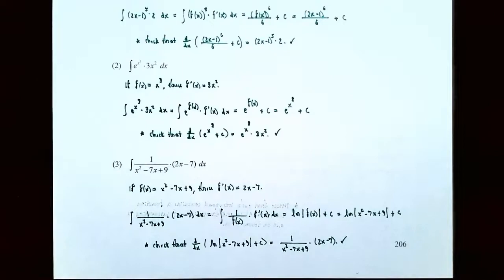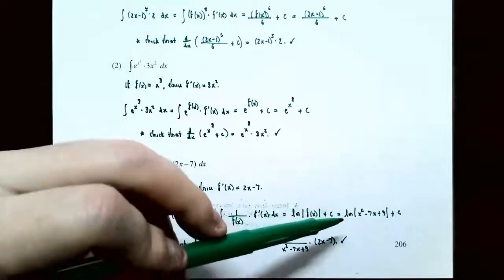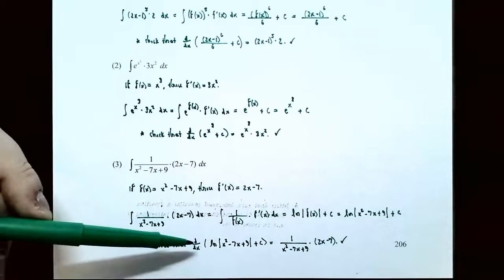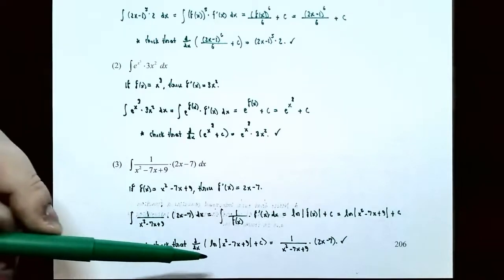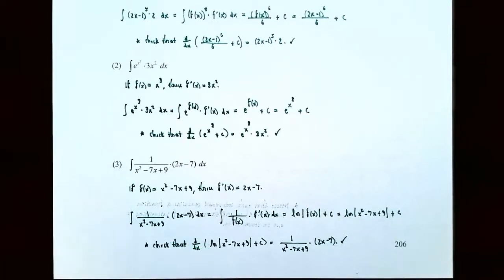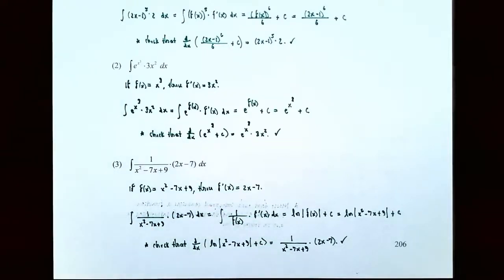That's the family of antiderivatives for this original integral. You can check your answer by taking the derivative of this family of antiderivatives and you should get the original integrand. So if you take the derivative with respect to x of the natural log of the absolute value of x squared minus 7x plus 9 plus c, you should get 1 divided by x squared minus 7x plus 9 times 2x minus 7, using the chain rule.